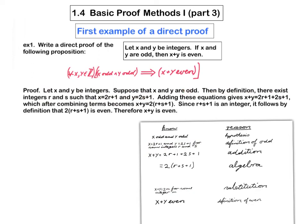Now the next sentence comes from these two lines here. I say adding these equations gives this, which, after combining terms, becomes this.